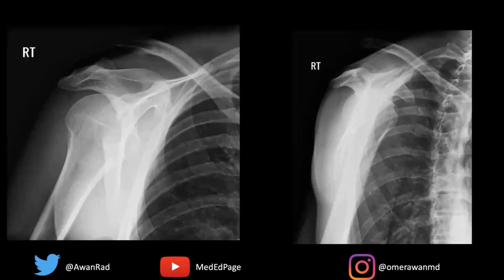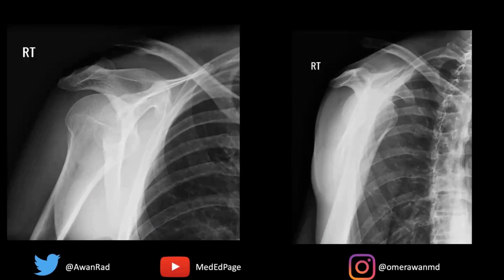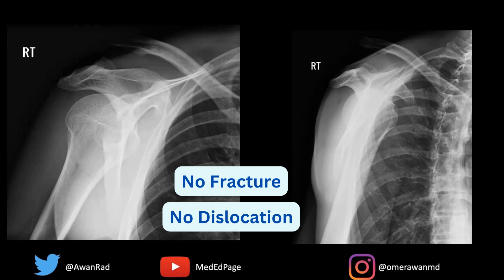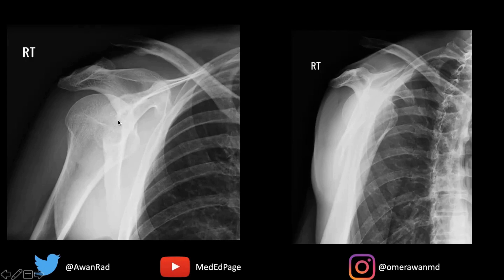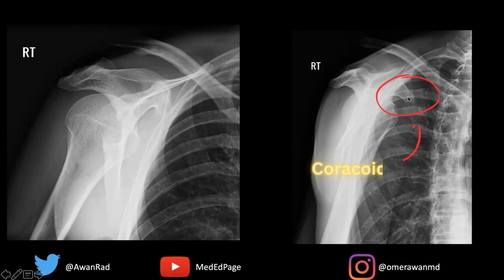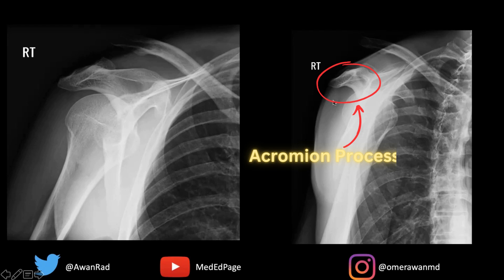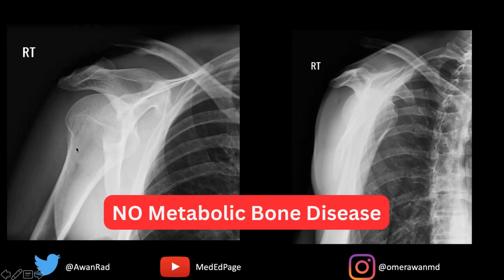If we take a look here, notice first of all that the glenohumeral joint is maintained. There's no acute fracture that we see, and no dislocation of the glenohumeral joint — the humerus is articulating well and normally with the glenoid. We see that here as well in the scapular wide view. If there was an anterior dislocation, the humeral head would be under the coracoid process of the scapula. If there was a posterior dislocation, the humeral head would be under the acromion process. We don't see any evidence of metabolic bone disease; the mineralization of the bone is adequate.